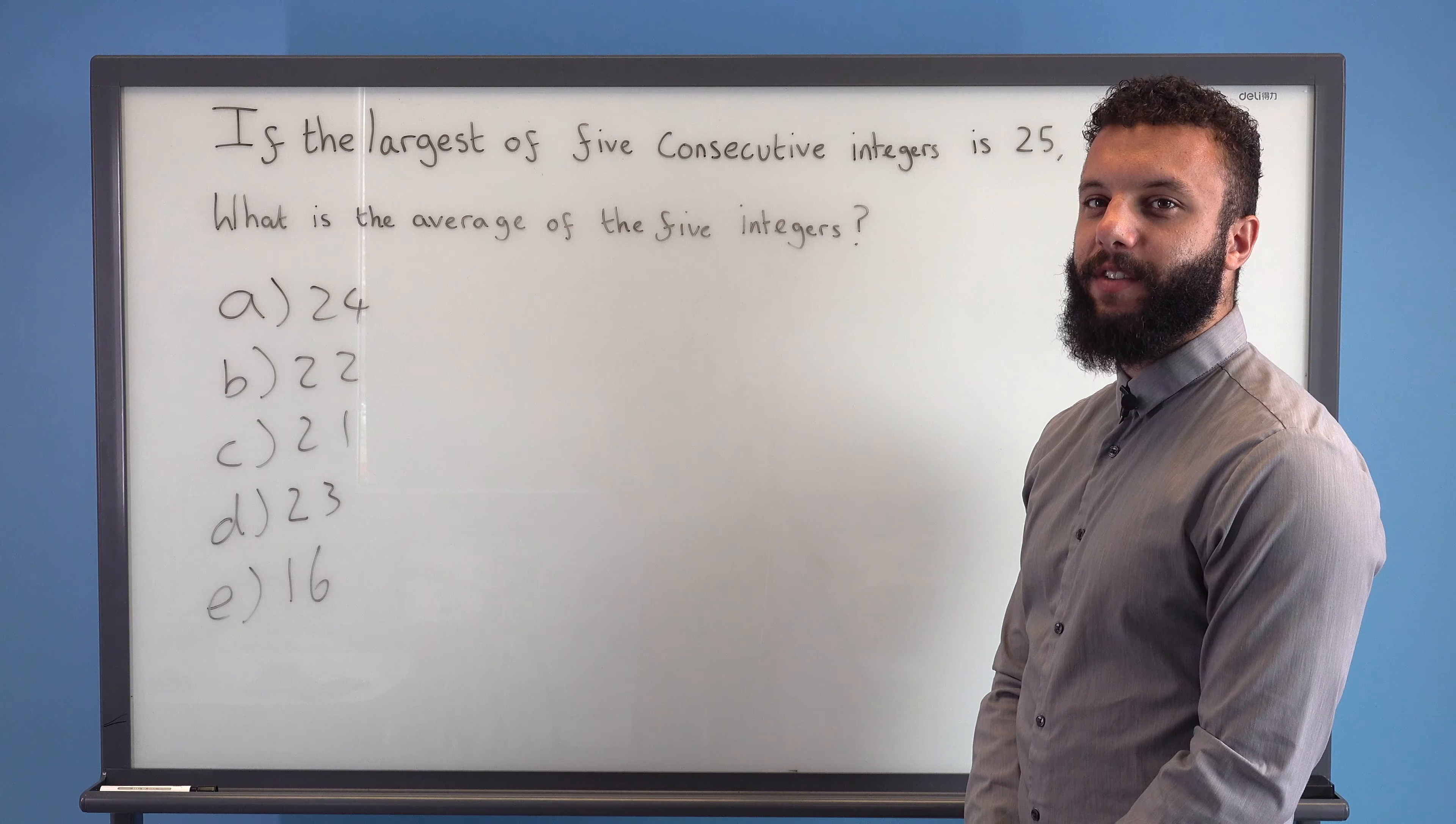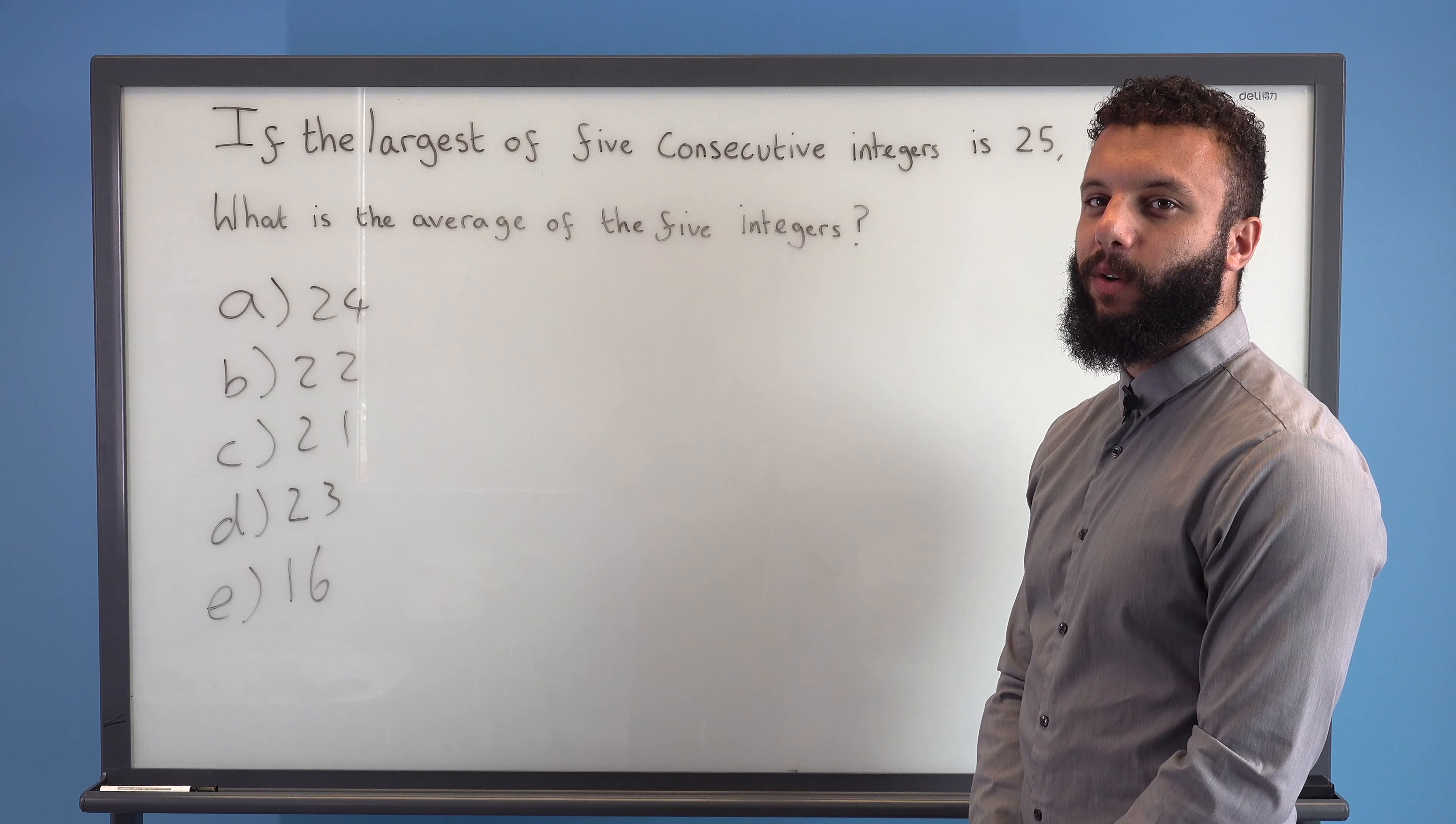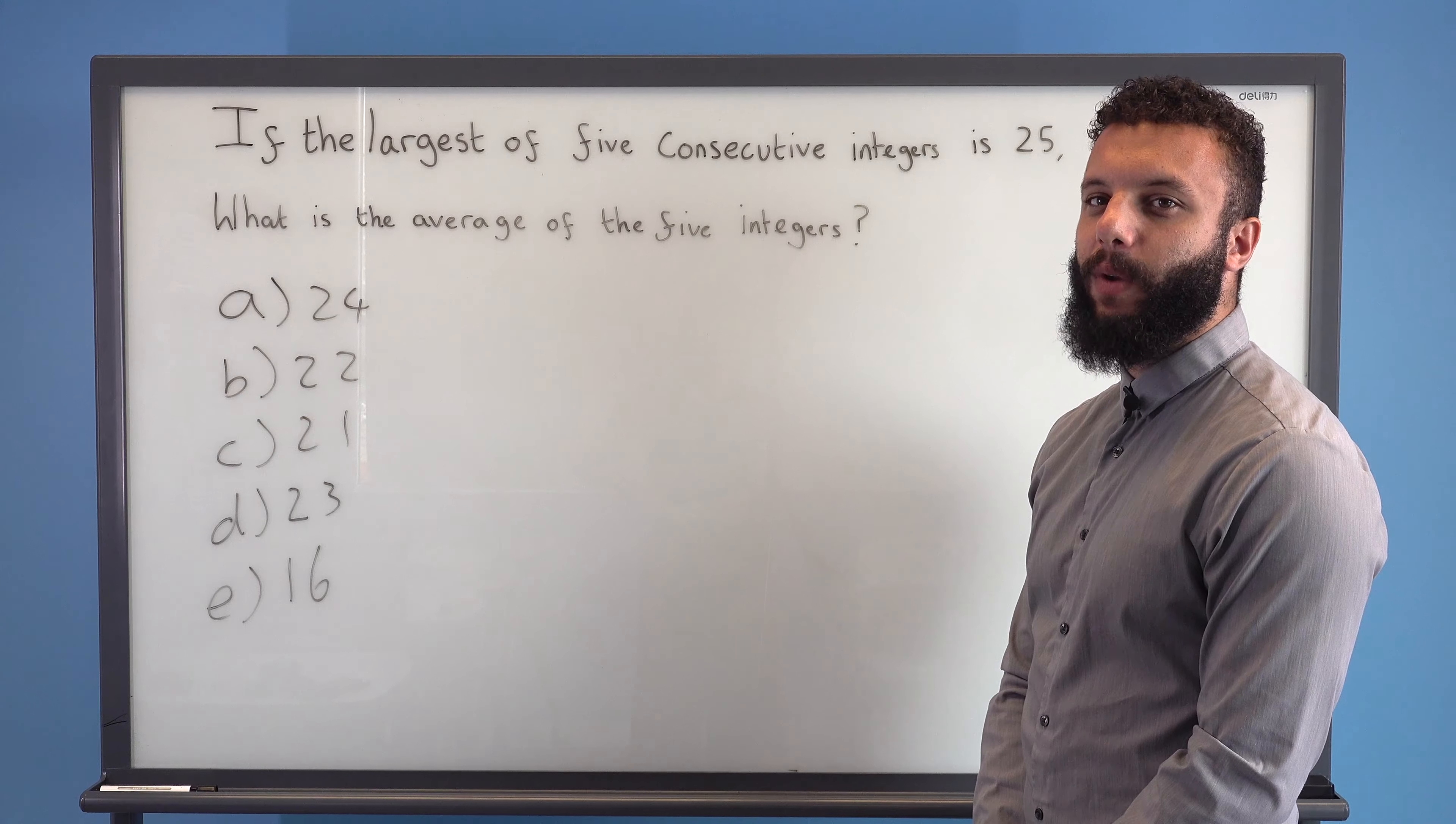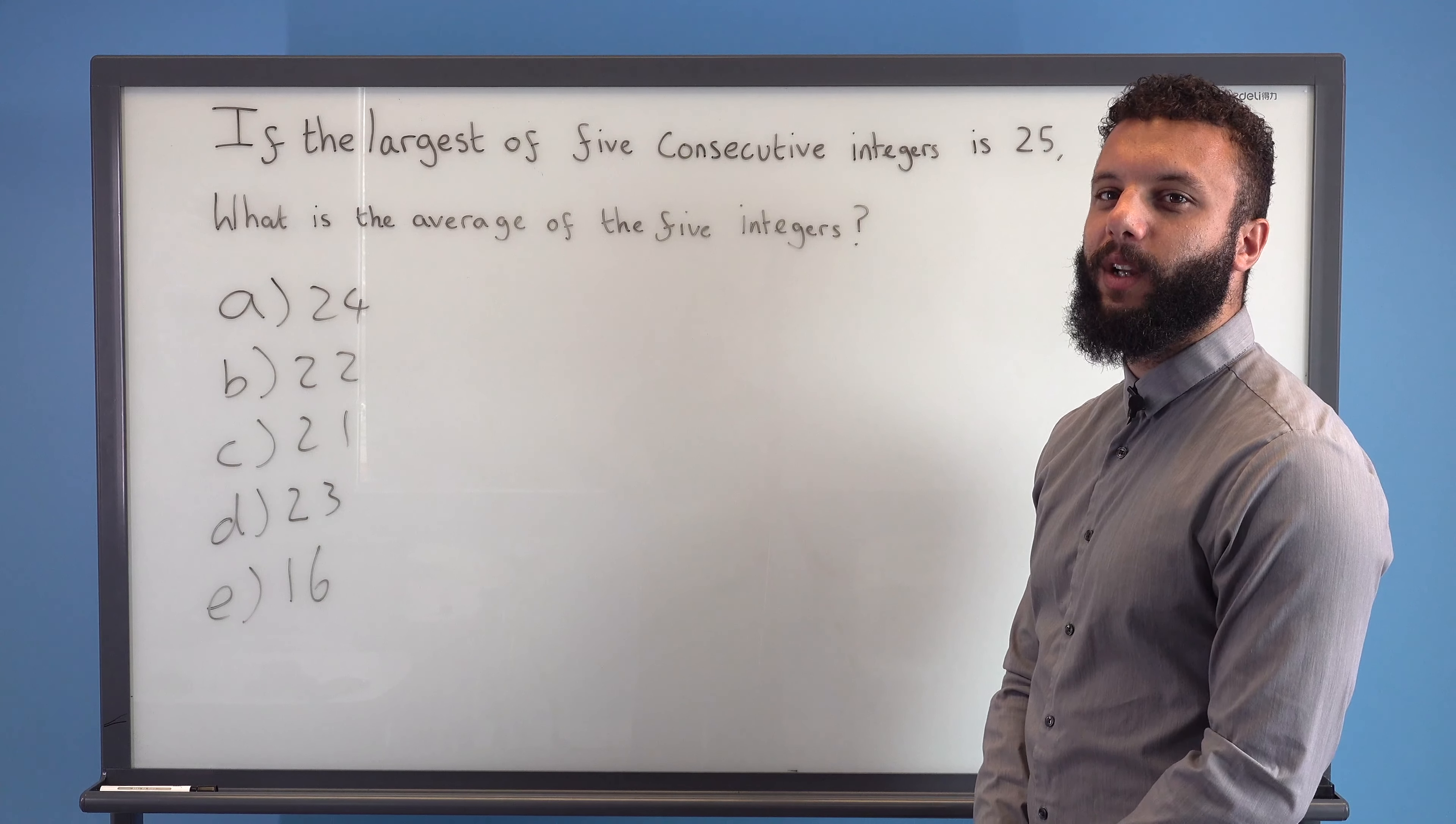So consecutive means next to each other, integer means whole number. So if the largest whole number is 25, our numbers must be 21, 22, 23, 24, and 25.